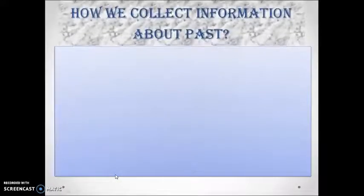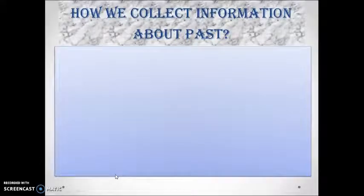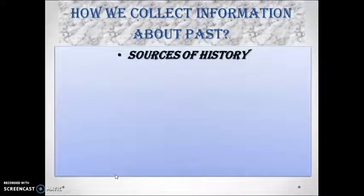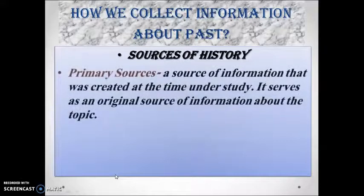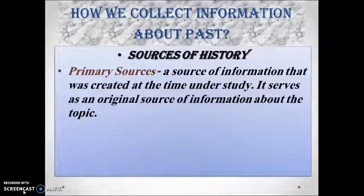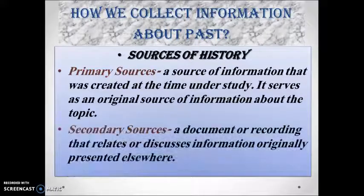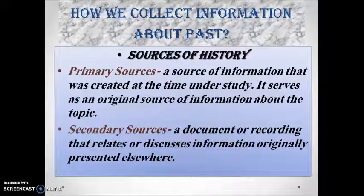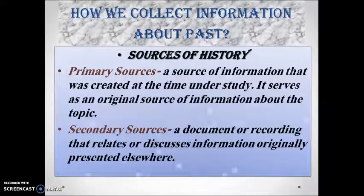Before moving further, we should know how historians collect information about the past. Historians are basically dependent on sources of history, which are divided into two broad categories. First is primary sources — a source of information created at the time under study, serving as an original source. Another category is secondary sources — a document or recording that relates or discusses information originally presented somewhere else.